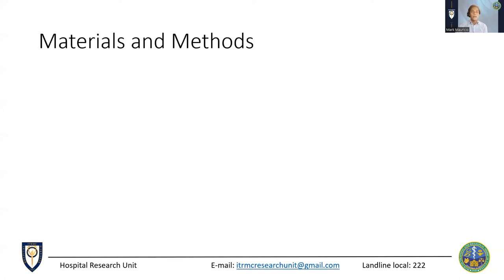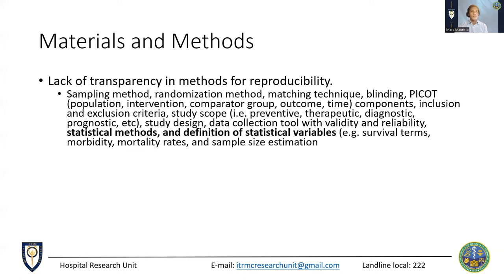The next part of the manuscript is the materials and methods section, whose function is to describe all experimental procedures including controls. The most common mistake is the lack of transparency in methods. Authors often submit incomplete descriptions of their studies, which negatively impacts reproducibility. Any scientific study, when read by another person, must always be reproducible. It is therefore important to include: the sampling method, randomization method, matching technique, blinding, calculation, intervention, comparator, outcome and time components, inclusion and exclusion criteria, study scope (whether preventive, therapeutic, diagnostic, or prognostic), study design, and data collection tool with validity and reliability.